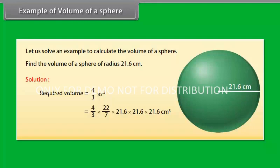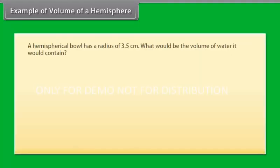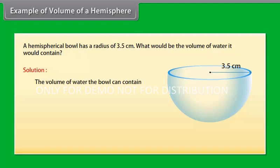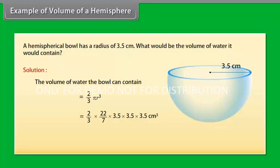The volume of the sphere works out to 42230.34 cm³. For an example of the volume of a hemisphere: a hemispherical bowl has a radius of 3.5 cm. What would be the volume of water it would contain? The volume of water the bowl can contain is (2/3)πr³ = (2/3) × (22/7) × 3.5 × 3.5 × 3.5 cm³, which is equal to 89.8 cm³.